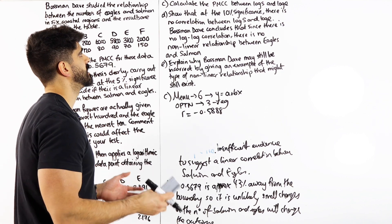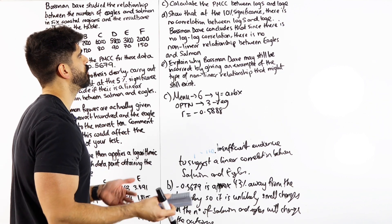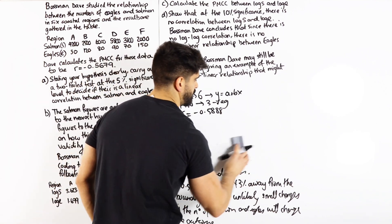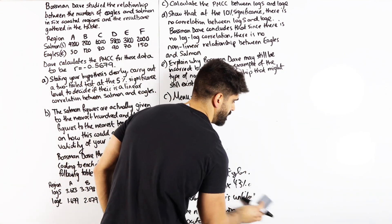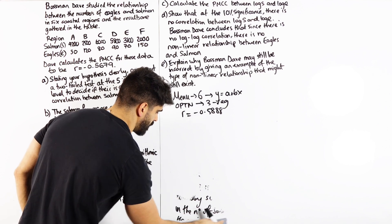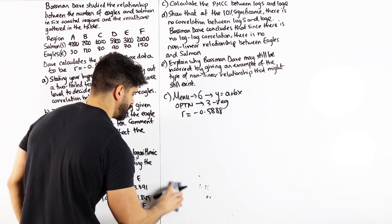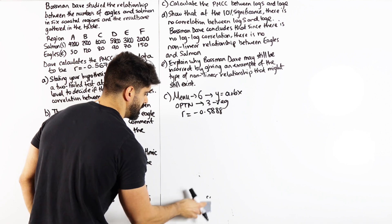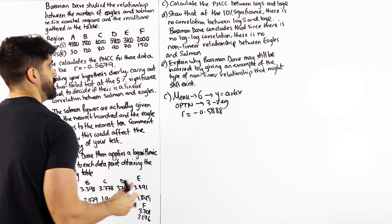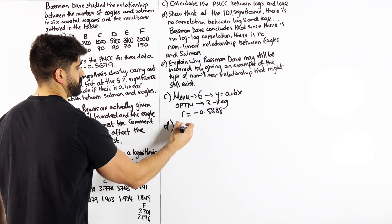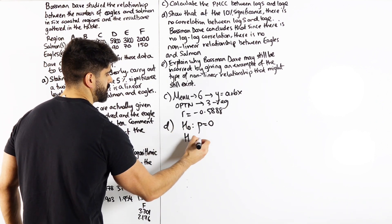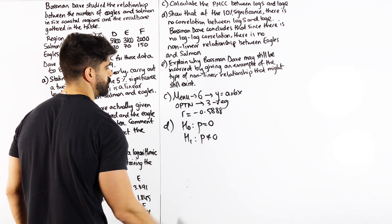It says, show that at the 10% significance, there is no correlation between log S and log E. All right, so we're basically just doing the exact same thing. You guys should treat this as easy marks, free marks. Free as in F-R-E-E, not three marks, although this could be worth three marks. So we're going to do the same thing for part D. We're going to say H0, we're going to assume there's no correlation. H1, we're going to assume that there is some sort of correlation.